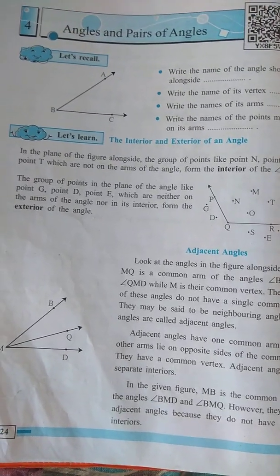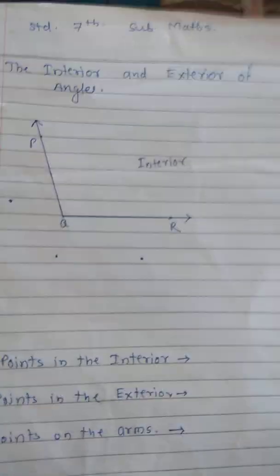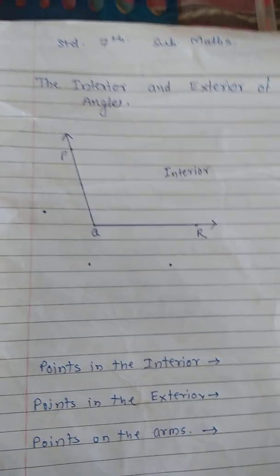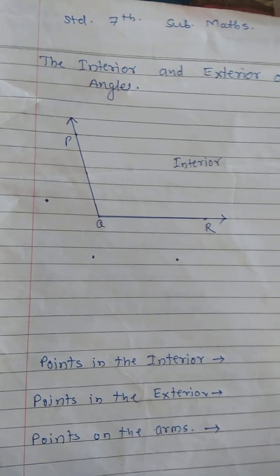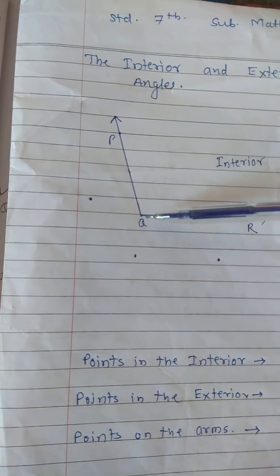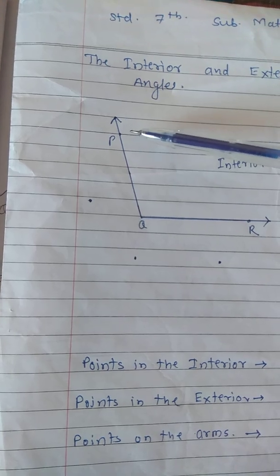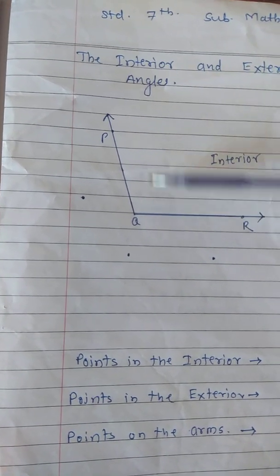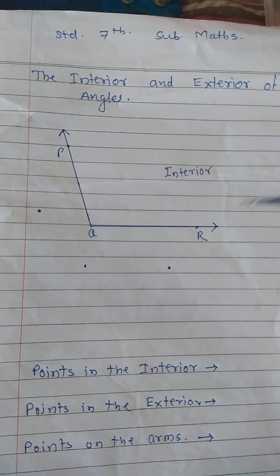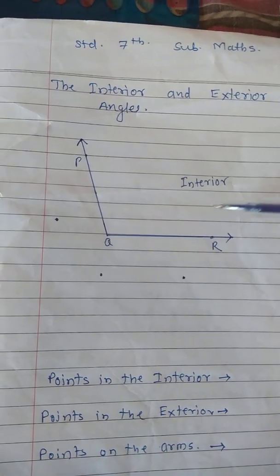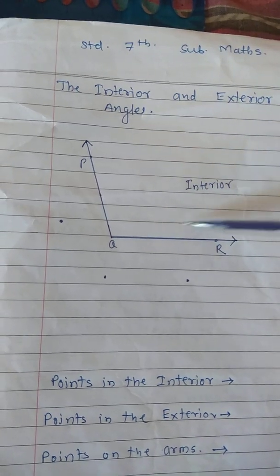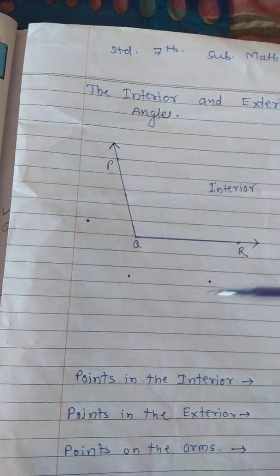Here we can see angle PQR is given. QP is one of the arms of the angle, and QR is one of the arms of that angle. Here is the interior part of this angle, and this one is the exterior part of that angle.